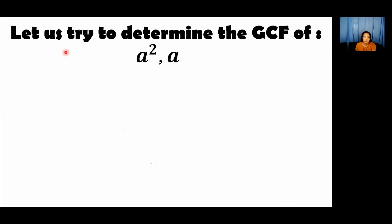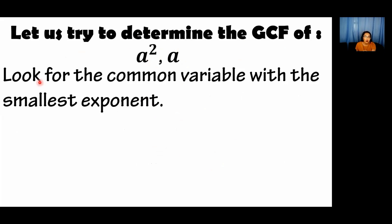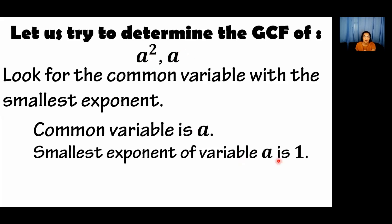How are we going to determine the GCF of variables? For example, a squared and a. Kanina sa definition ng GCMF, nabanggit yung smallest exponent, so ganun lang yung gagawin natin for variables — look for the common variable with the smallest exponent. Common sa kanila ang a. Dito sa a squared, ang exponent niya ay 2. Dito sa a, ang exponent niya ay 1. That is why ang ating smallest exponent of the variable is 1, so ang GCF natin is a only — hindi a squared. When we have a variable like a, meron na siyang invisible 1 sa kanyang exponent.